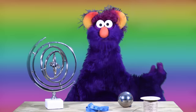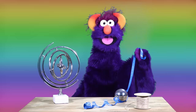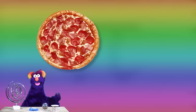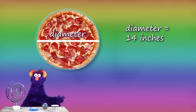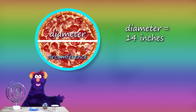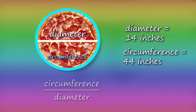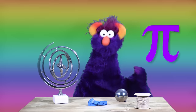Let's see if it works for pizzas. You can use a measuring tape, or you can use a string. What's the diameter of this pizza? 14 inches. What's the circumference of this pizza? About 44 inches. The circumference divided by the diameter is about 3.14. That's pi — pizza pie!